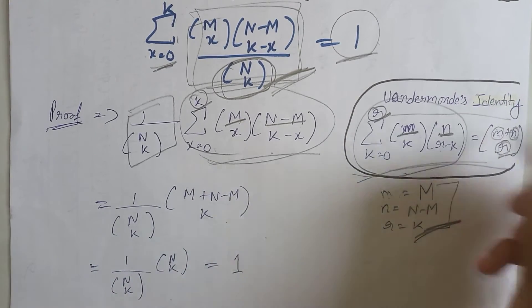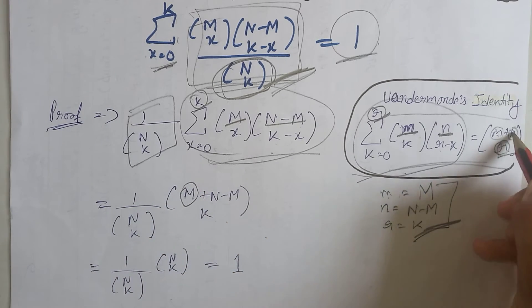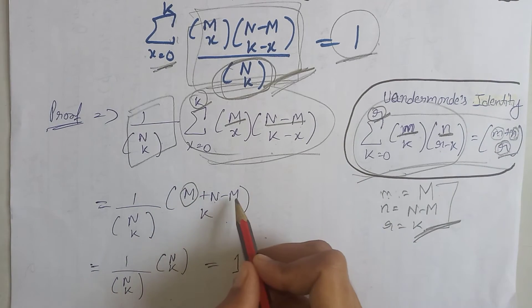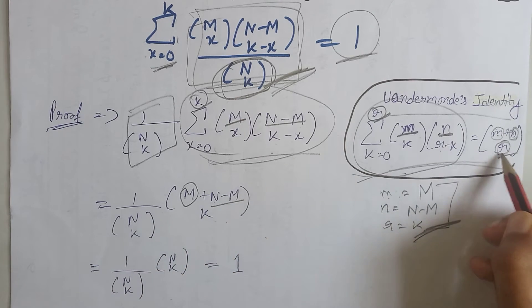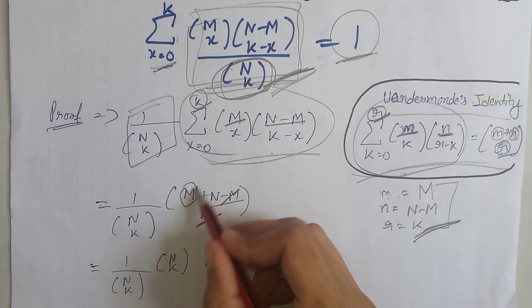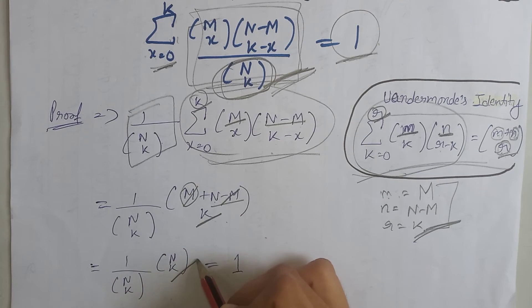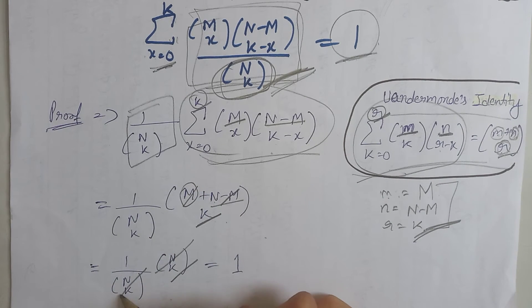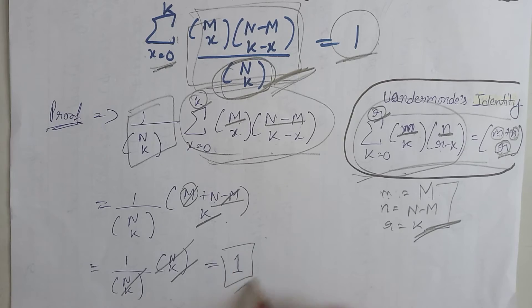Now using these terms, at the place of m we write here M, and at the place of small n we write here capital N minus capital M, and at the place of r we write here k. Now after cancelling M with minus M, we get this term, then it will be cancelled by this term, and we get 1 as our answer.